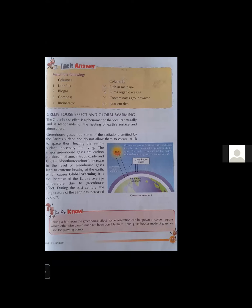Taking a hint from the greenhouse effect, some vegetation can be grown in colder regions which otherwise would not have been possible. You may see in many fields that farmers are using polyhouses. Polyhouses work on the principle of the greenhouse effect — inside them, we can grow vegetables during winter which are not possible to grow outside. Greenhouse structures made of glass are used for growing plants.